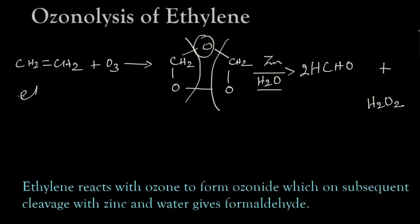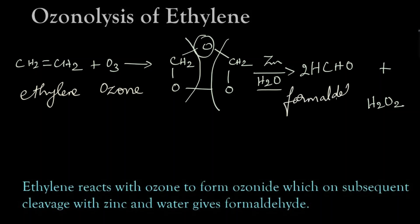This is ethylene. Ethylene reacts with ozone and forms an ozonoid, which on further hydrolysis in the presence of zinc gives formaldehyde and hydrogen peroxide. To summarize: ethylene reacts with ozone to form an ozonoid, which on subsequent cleavage with zinc and water gives formaldehyde. Thank you.